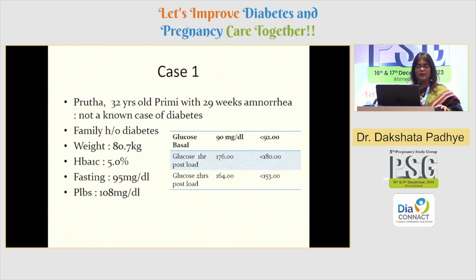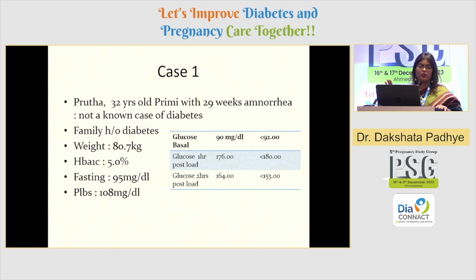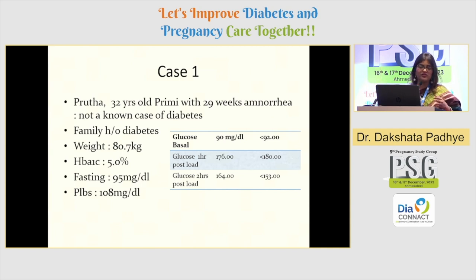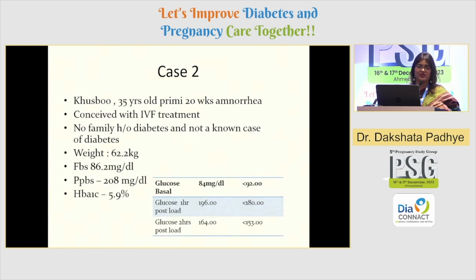Case 1: 32-year-old female, primigravida, 29 weeks of amenorrhea. She's not a known case of diabetes. If you look at her sugars — the laboratory followed the ADA criteria — post-glucose sugar at two hours is showing 164, minimal hyperglycemia. HbA1c turned out to be 5.0. Fasting 95 and post-meal 108. So this patient falls under gestational diabetes, right? This patient can be given a lifestyle modification trial without blindly starting metformin. Forget about insulin — we can wait for two weeks. Believe me, all of us know that the pregnant diabetic patient is the most motivated diabetic patient until delivery. She did really well on only lifestyle modification and continued it till delivery.